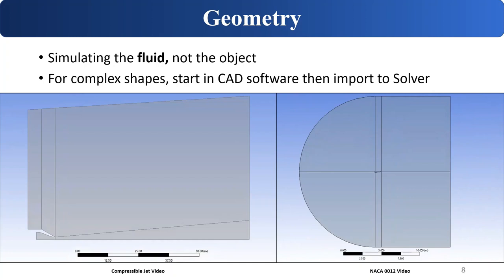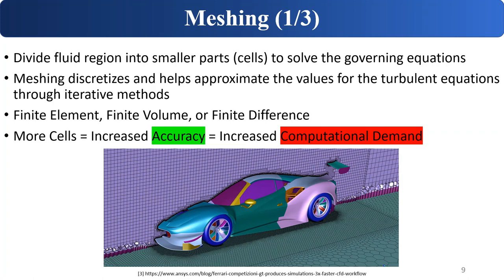Coming back to the exact workflow, we first start with the geometry. One thing that was a little tricky for me to grasp is that you're simulating the fluid, not the object. In the case of a compressible jet, you subtract the jet itself and simulate the fluid about, around, and outside of it. In the case of an airfoil, you're simulating what would be the wind tunnel — outside of the airfoil. The airfoil itself is just the boundary.